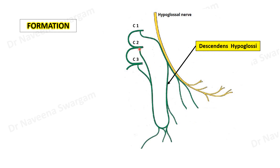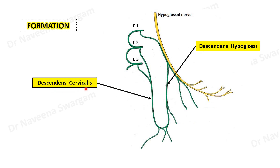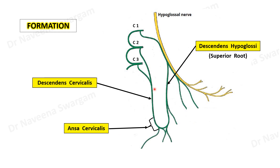It descends vertically, known as descending hypoglossi. Similarly, branches from C2 and C3 unite to form a nerve which descends vertically parallel to descending hypoglossi, known as descending cervicalis. Both nerves unite to form a loop known as ansa cervicalis. Descending hypoglossi is also known as the superior root, whereas descending cervicalis is also known as the inferior root of ansa cervicalis.